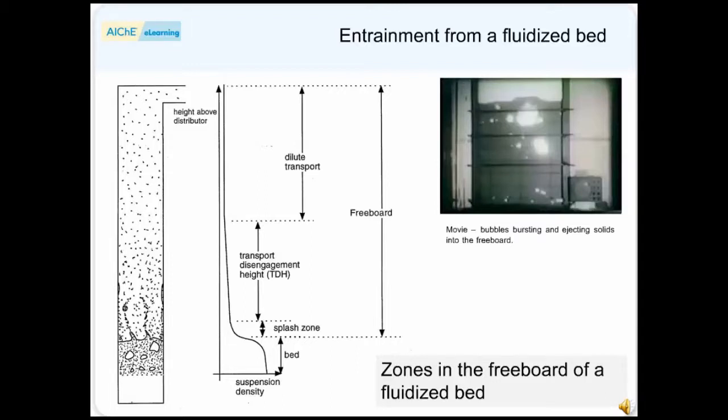The region just above the surface is known as the splash zone. This is the region where the larger particles fall back down. The disengagement zone is the region above the splash zone in which the upward flux and suspension concentration of particles decreases with increasing height.